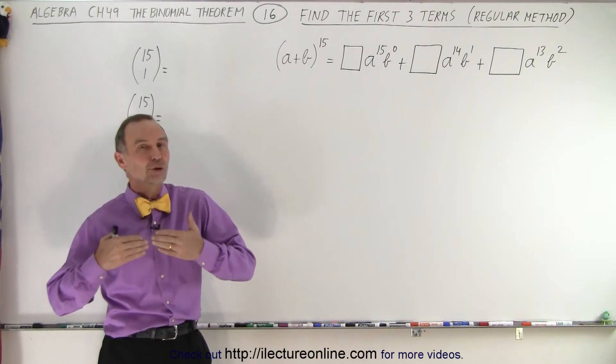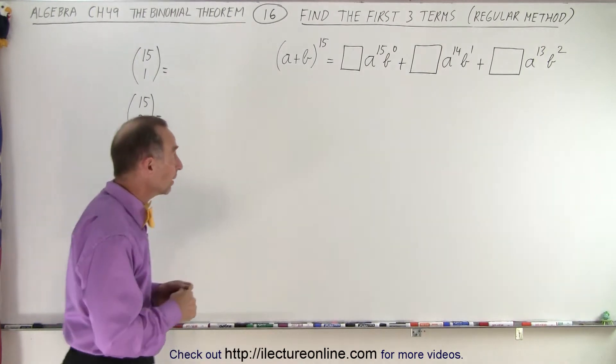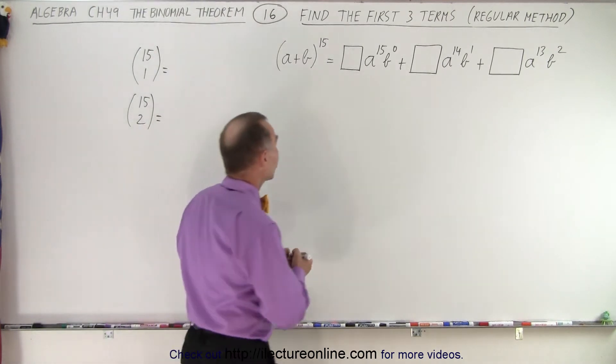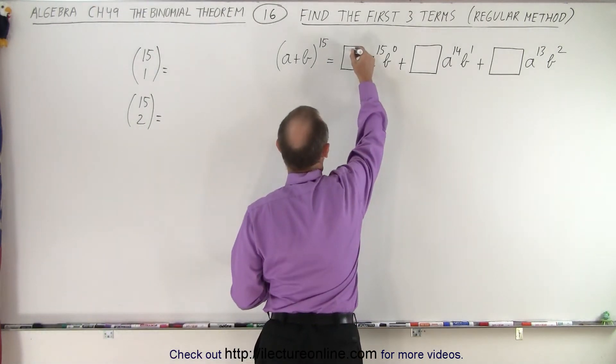Well, don't worry because you still have the normal method of doing so, the regular method, and so we're going to try to find the coefficients. You might remember that the first term is always going to be equal to one, that never changes.